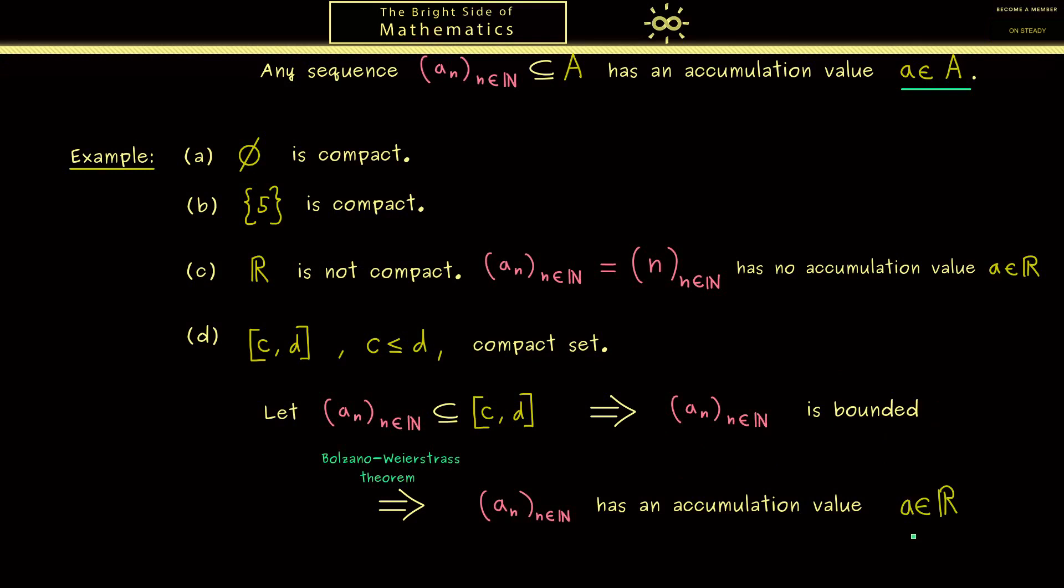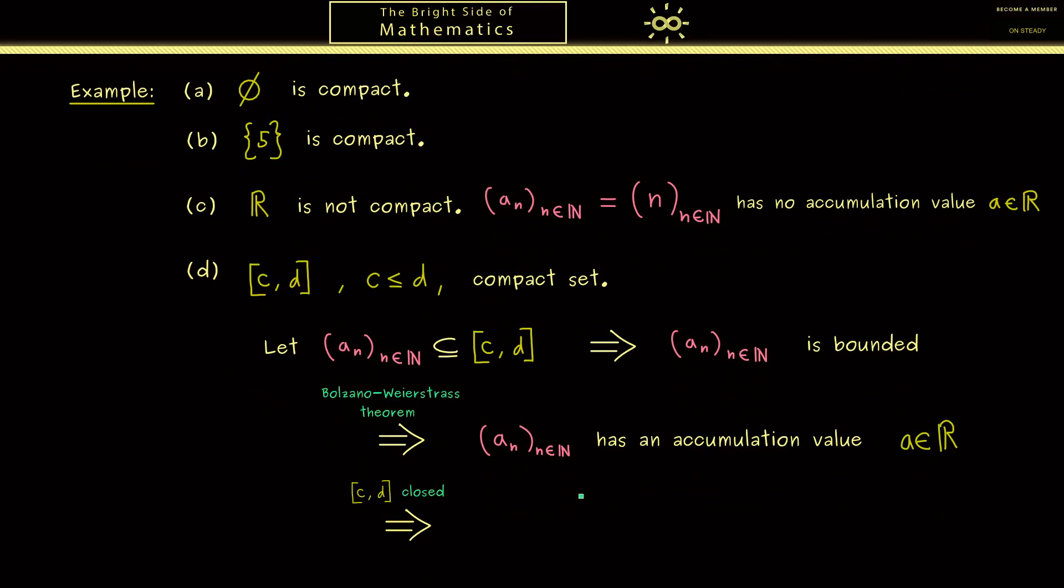Now the only information that is still missing is that a is actually an element of our set. However this is guaranteed because we already know that such an interval is a closed set. Here please recall closed means that we can't leave the set by using sequences from the inside. And with this we have proven that the set is indeed compact. Hence all intervals of this form we now can just call compact intervals.